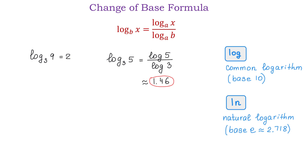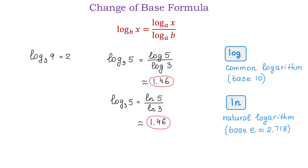If instead of the common logarithm we want to use the natural logarithm, then we will have the following: log base 3 of 5 equals ln 5 over ln 3. In this case both logarithms have base e and we write 5 in the numerator and 3 in the denominator. If we use the calculator again we will get the approximate value of 1.46. So to evaluate this logarithm we used logarithms with base 10 and base e, but whenever needed we can use any other base as long as it is positive and not equal to 1.